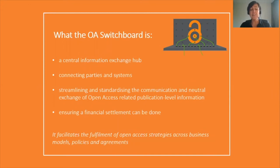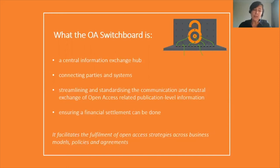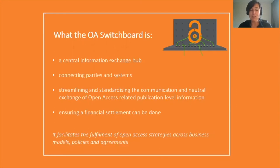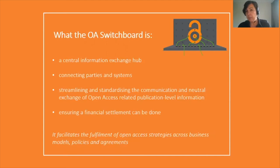So what is the hub — what is the tool? The OA Switchboard is a central information exchange hub connecting parties and systems, streamlining and standardizing the communication and neutral exchange of OA-related, publication-level information. It's always situational and always an interaction at a point in time — there is no big database of policies or contracts. There is a situation at hand about which a funder and a publisher want to communicate, and the Switchboard enables them to do that. It enables a financial settlement to be done, but the OA Switchboard does not get involved in invoicing or collecting money — it's only information about the settlement, whether that's an APC or an arrangement under a read-and-publish deal or a diamond model.